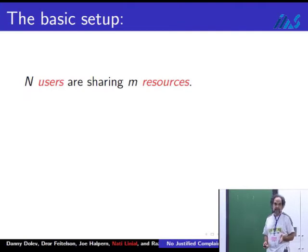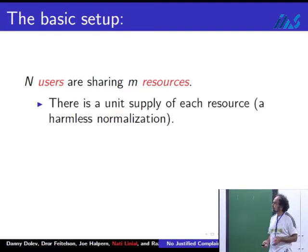The setup is quite simple. We have N users and they're sharing M resources. I can assume, and I will, that costs nothing in terms of limiting applicability. There is one unit of supply of each resource.